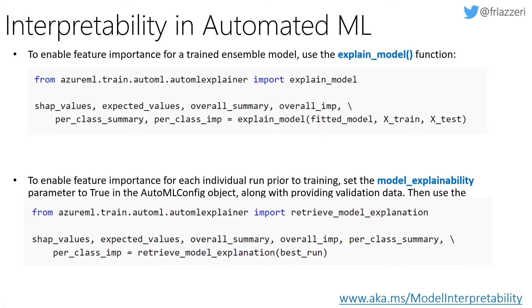As I mentioned, interpretability is also available for automated machine learning. In order to enable feature importance for a trained model, you can use the explain_model function.